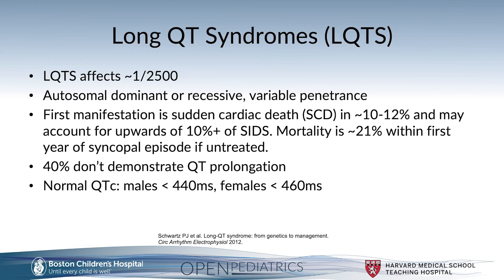Long QT syndrome affects approximately 1 in 2,500 patients. It can be inherited in both autosomal dominant and recessive fashions with variable penetrance. The first manifestation can be sudden cardiac death in up to 10 to 12 percent, and some studies have shown it may account for upwards of 10 percent or more of SIDS mortalities. Mortality can be upwards of 21 percent within the first year of a single episode if left untreated. Forty percent of patients with long QT syndrome don't demonstrate QT prolongation on a baseline EKG. A normal QTc in males is defined as less than 440 milliseconds, whereas a normal QTc in females is defined as less than 460 milliseconds.